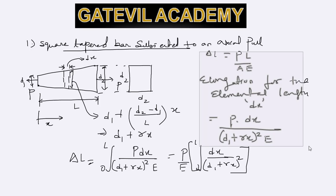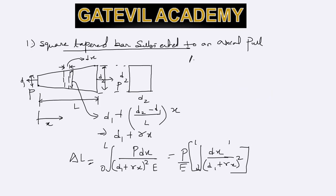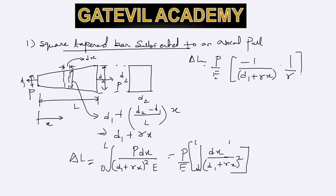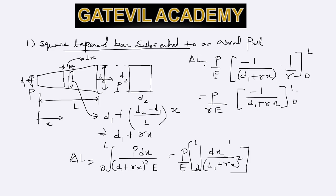Integrating, delta L equals P by E. On integrating (d1 plus gamma x) to the power minus 2, we get minus 1 over (d1 plus gamma x) multiplied by 1 over gamma, evaluated from 0 to L. So this becomes P by (gamma E) times minus 1 over (d1 plus gamma x), from 0 to L.